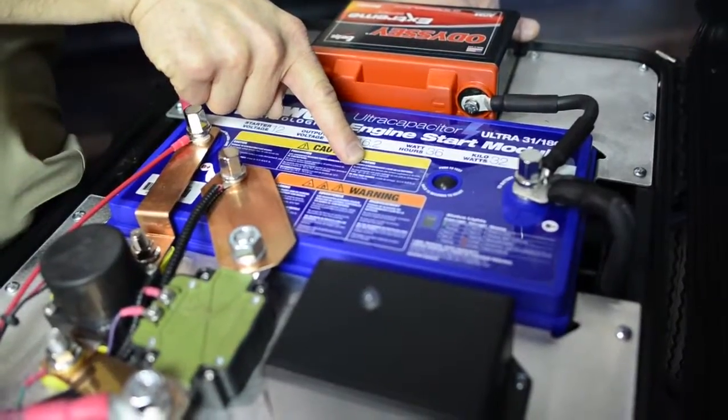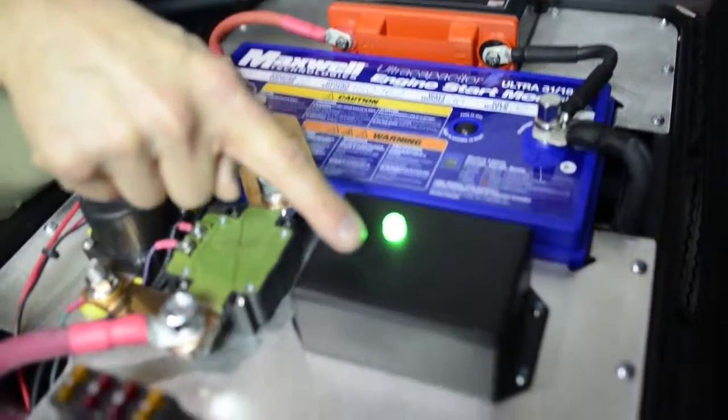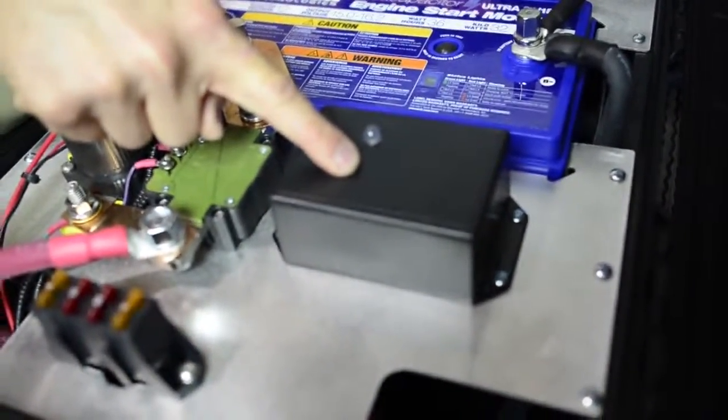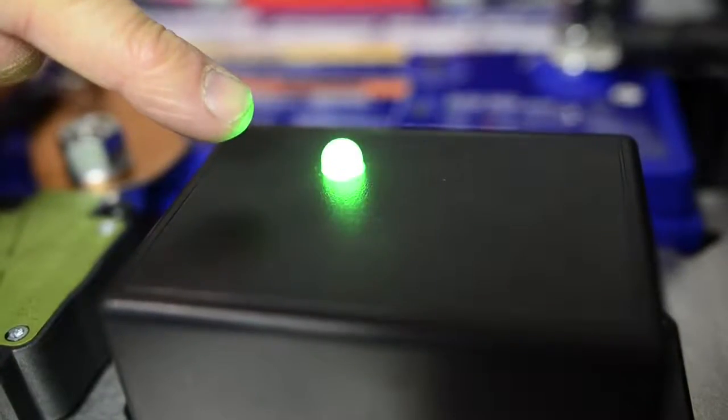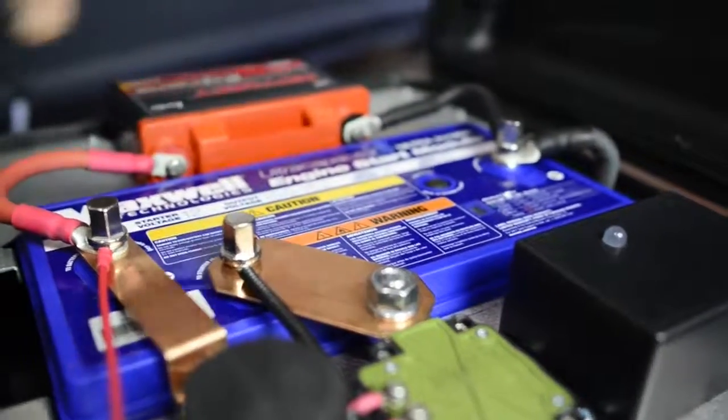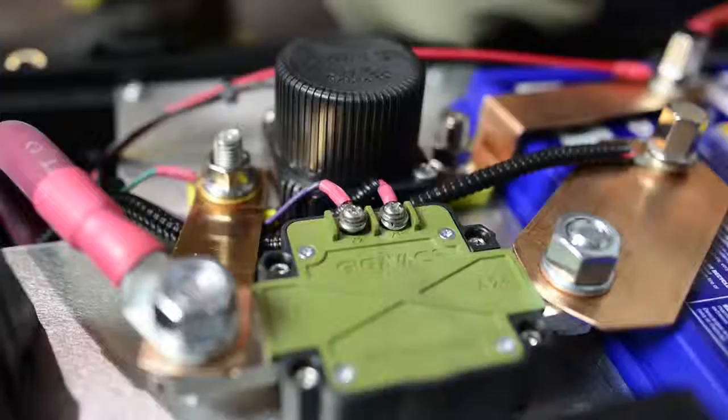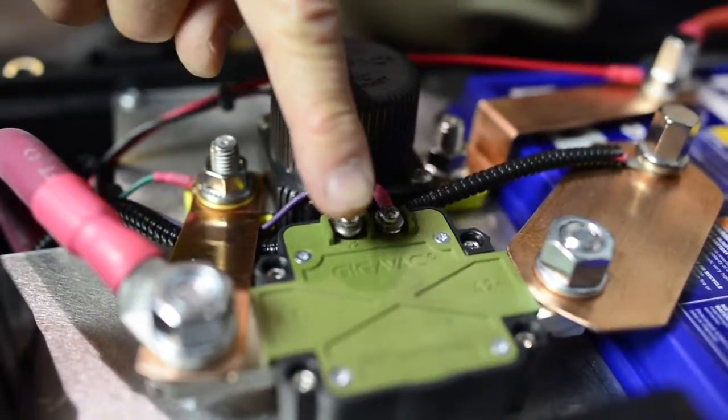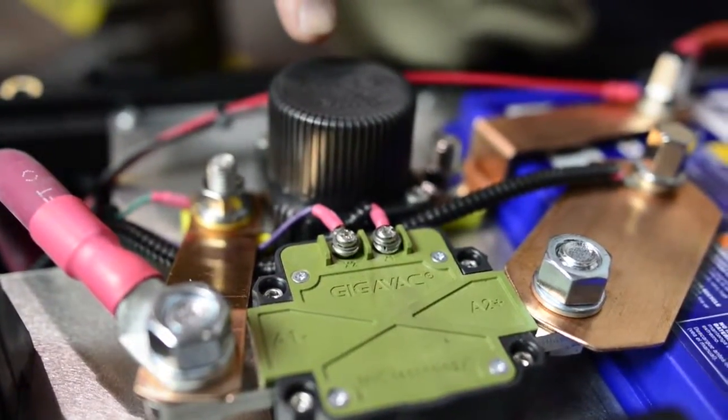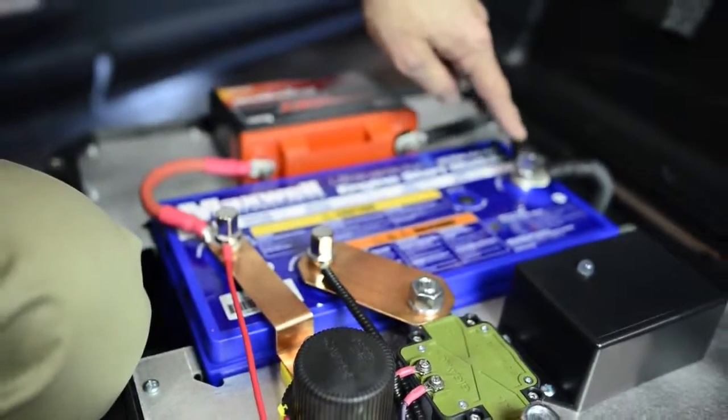The heart of the CAPS unit is the capacitor, but the brains of the CAPS is the control module. The control module controls everything going on inside the unit during a jump-start. It allows the battery to charge the capacitor and then operates the two magnetic switches to discharge the capacitor so you can complete the jump-start on the vehicle.